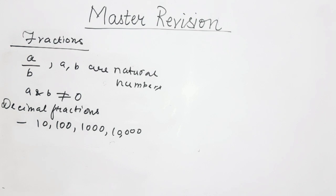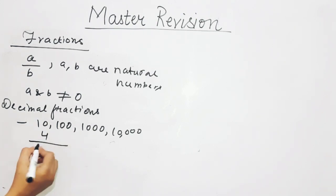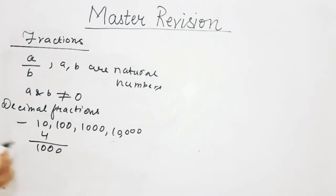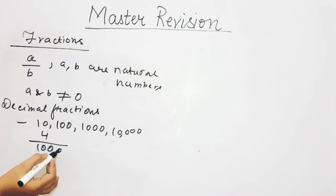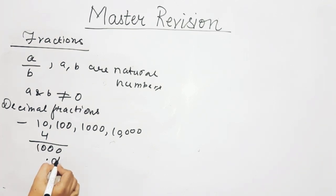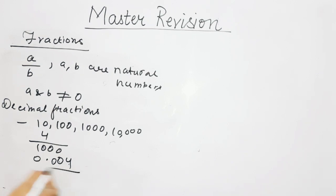For example: 4 upon 1000 — count 3 zeros, so three places are covered after the decimal point: answer is 0.004. And 14 upon 10,000 — count 4 zeros, so four places: answer is 0.0014.